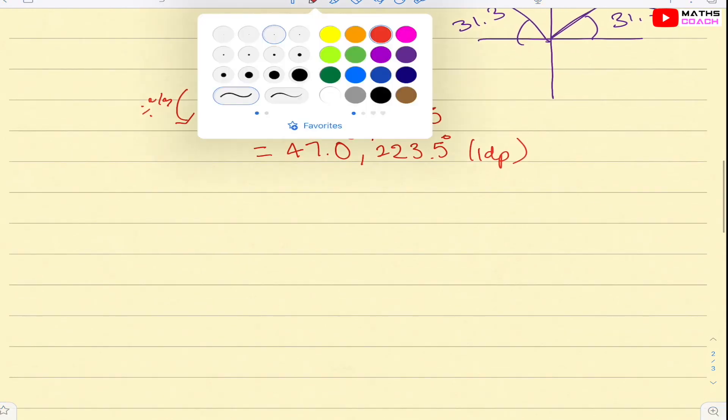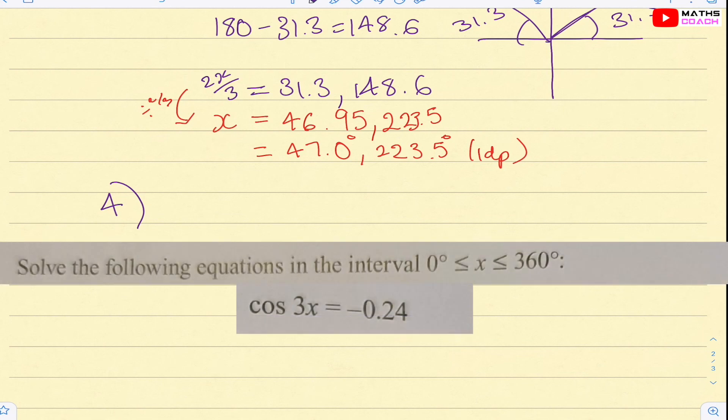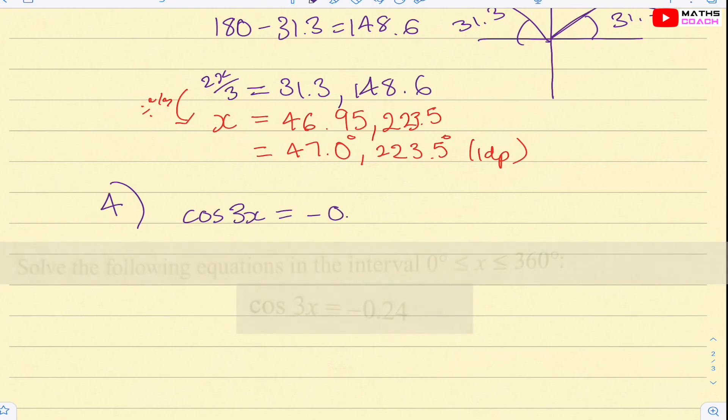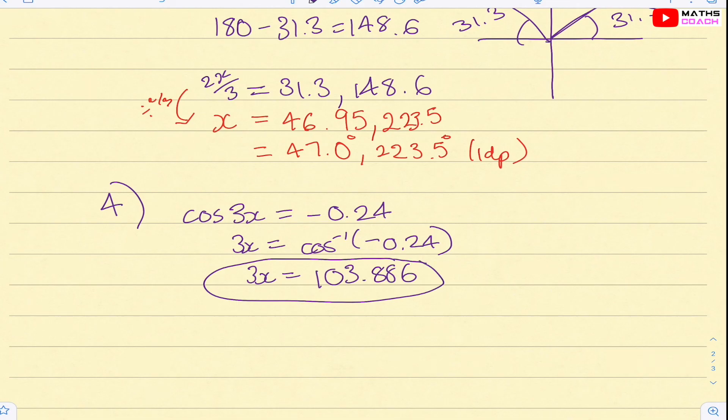So let's look at another example. What about if we now have adding or subtracting? Solve the following equations in the interval 0 to 360, where cos 3x equals to minus 0.24. So 3x the inverse cos, you get 3x equals to 103.886. Now, once we've got what 3x is actually equal to, we also want to change our interval. So in the question, it said between 0 and 360. However, we don't want x, we want 3x. So we're going to multiply the interval. So it will be 360 times 3, which is 1080. So this is our new interval where we're looking for the solutions of 3x.